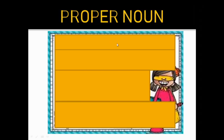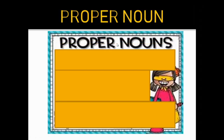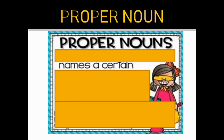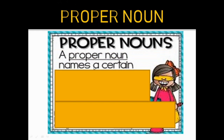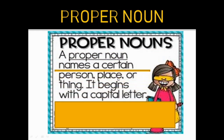As the name shows, a proper noun is the proper name for something. A proper noun names a certain, special, specific person, place, or thing. It begins with a capital letter. A common noun is not written with a capital letter, but a proper noun is always written with a capital letter.